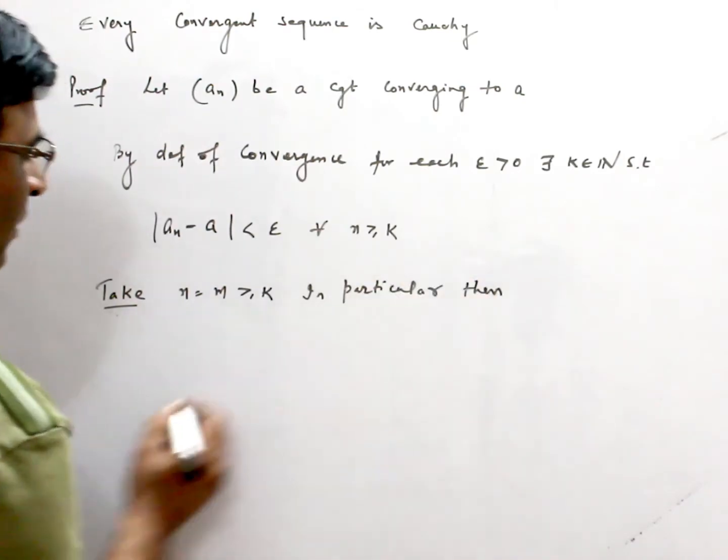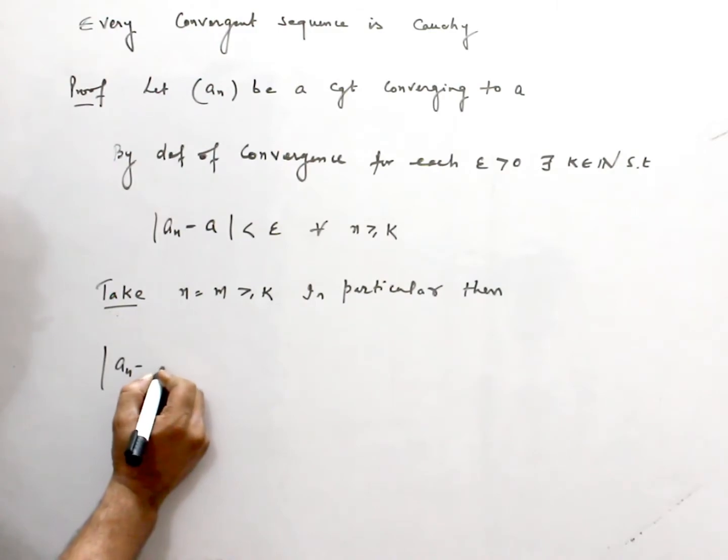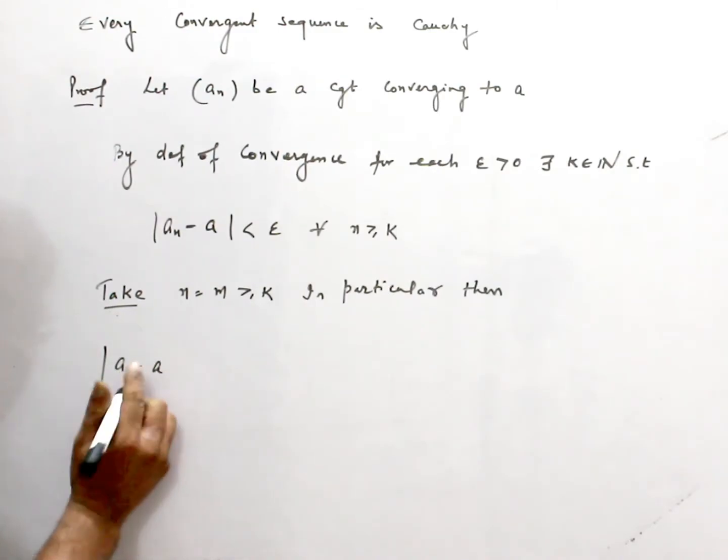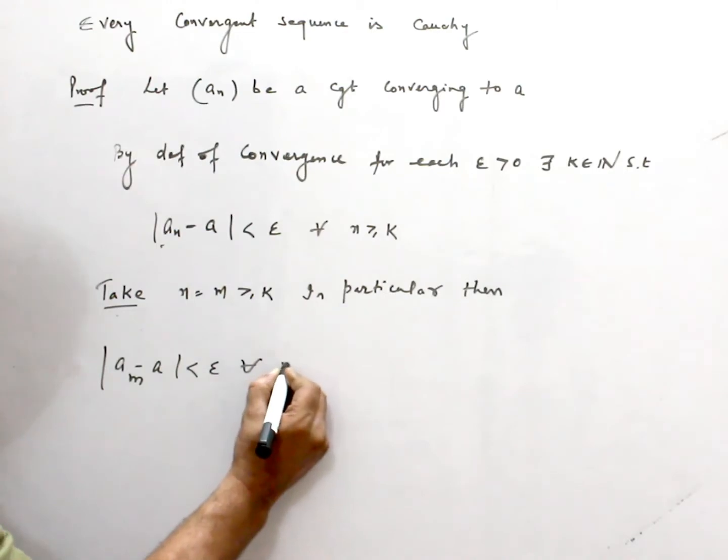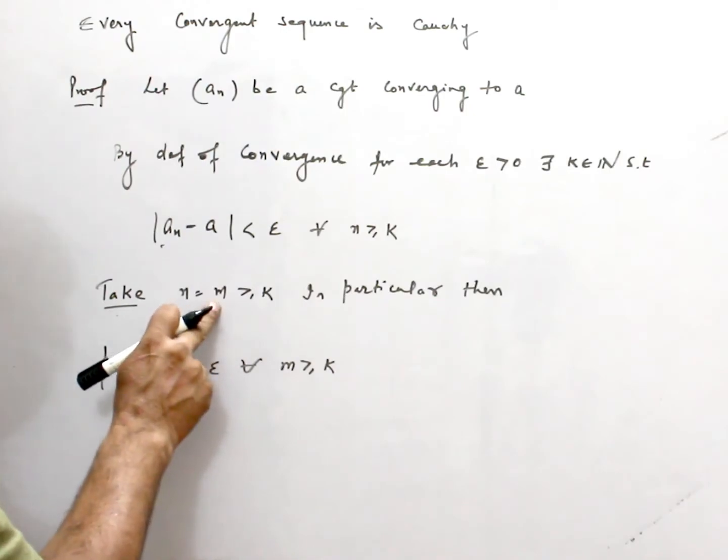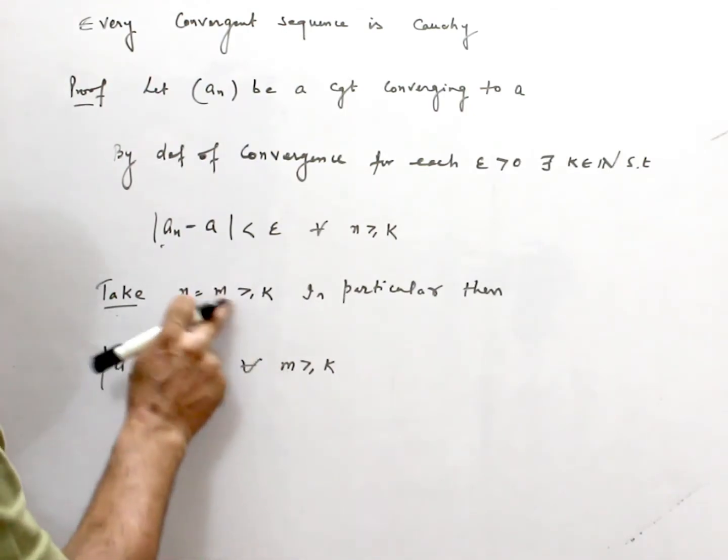then I can write: this becomes |Am - A| < ε for all m ≥ K, because m has already been selected greater than K.